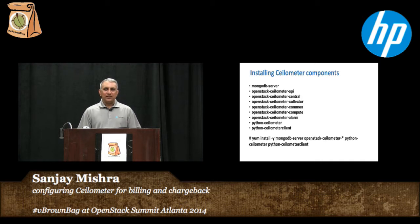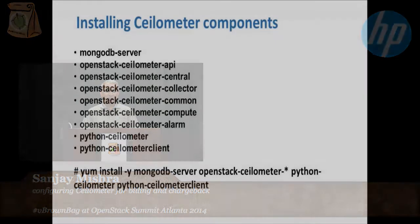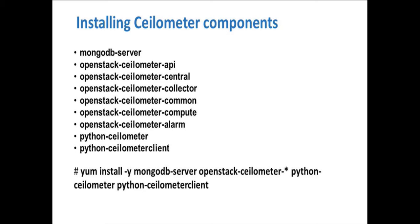A couple of different steps in getting Selometer up and running. Obviously, the first essential step would be to install the Selometer components. There are several of these. Selometer, in its default configuration, runs on top of a MongoDB database. And so the MongoDB database, the API server, the central collector, the Selometer collector, the common services, the compute agent, the alarm notifier, and then some core components and the command line interface via Python into the Selometer environment. To install these components if they weren't already installed in, say, a Red Hat environment, you run the command at the bottom of the screen and everything is laid down.